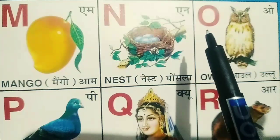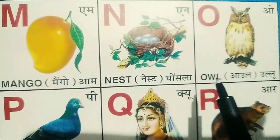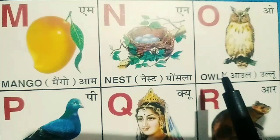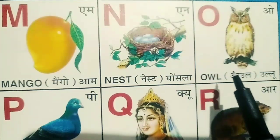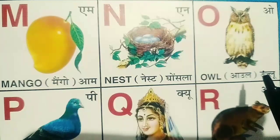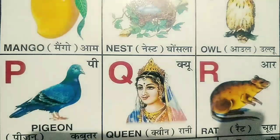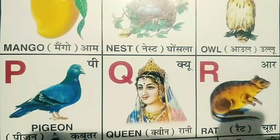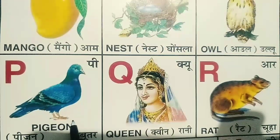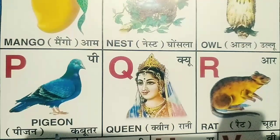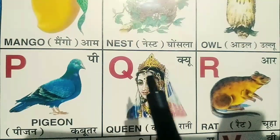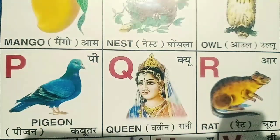O for owl. Owl means ullu. P for pigeon. Pigeon means kabutar.